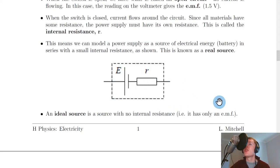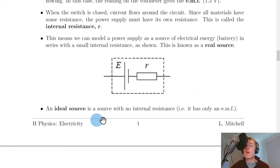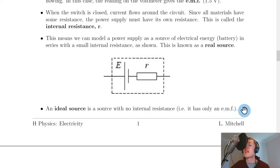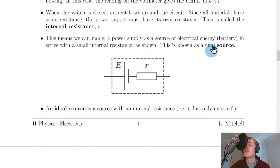When we enclose the battery with EMF E and internal resistance r inside a dashed line box, we call this a real source. An ideal source is a source with no internal resistance — it only has an EMF. In reality, a real source like a battery will have an internal resistance, which you would have ignored at National 5 level.